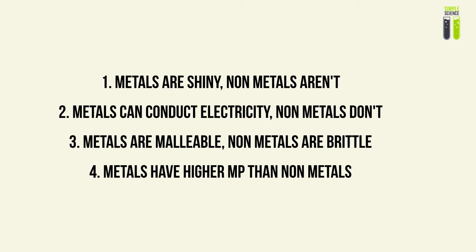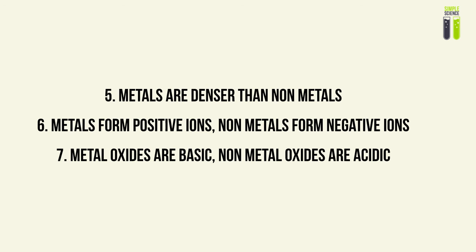Here are the key ideas from this video. Metals are shiny; non-metals aren't. Metals can conduct electricity and heat; non-metals generally don't — they are insulators. Metals are malleable; non-metals are brittle. Metals have higher melting points than non-metals. Metals are denser than non-metals. Metals form positive ions and non-metals form negative ions in reactions. Finally, metal oxides are basic and non-metal oxides are acidic.